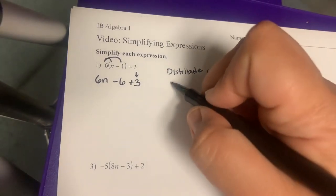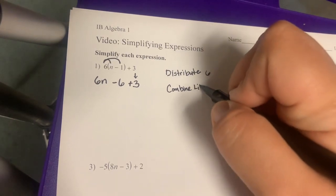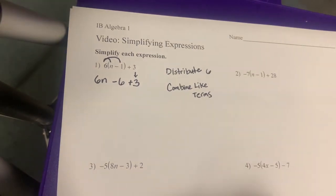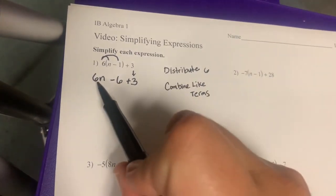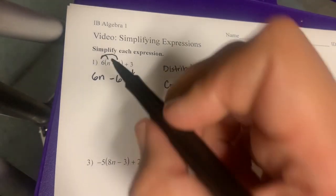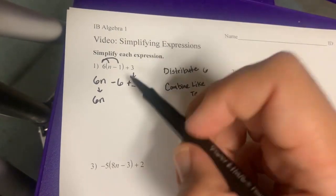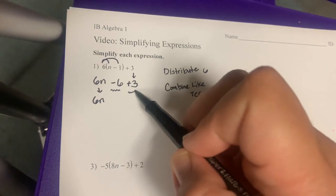Next thing I'm going to do is look to combine like terms. Like terms are going to be things that have the same variable, or things that both don't have a variable. In this case, I have 6n as my first term. There's no other terms that have an n in them, so I'm just going to bring the 6n down, nothing to combine it with. But I have this negative 6 and this positive 3...